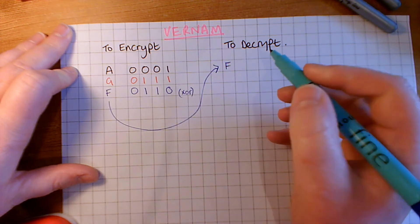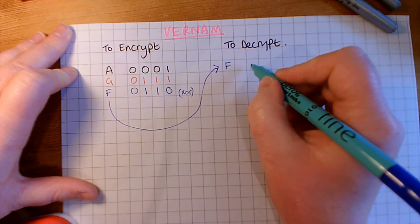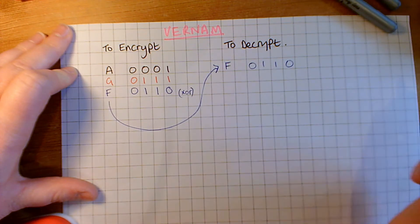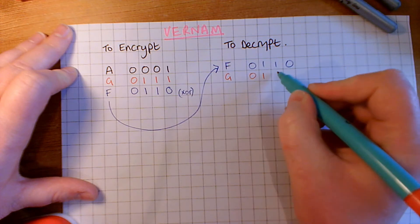Okay. So, what the user receives, or what the recipient, we've got zero, one, one, zero. Now, the key would have been agreed beforehand, so they will have the key, which is zero, one, one, one.